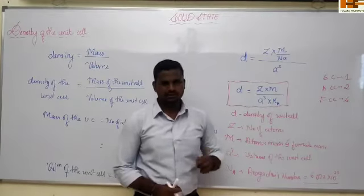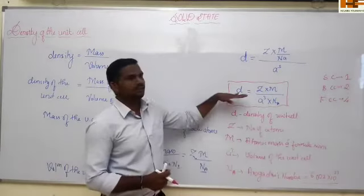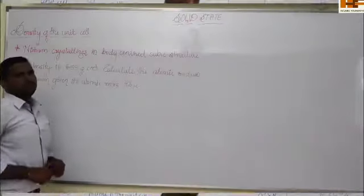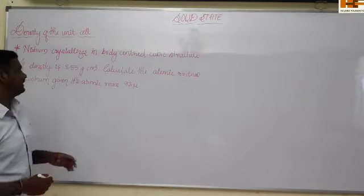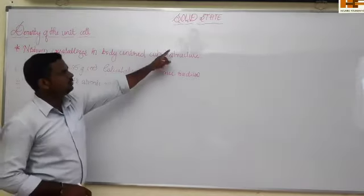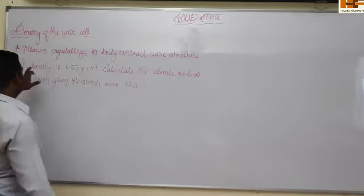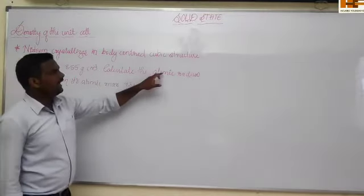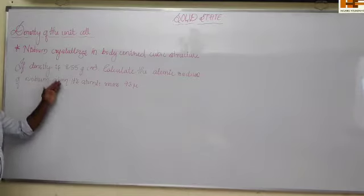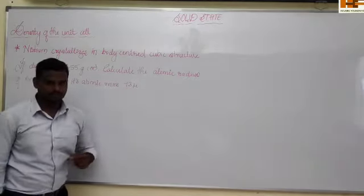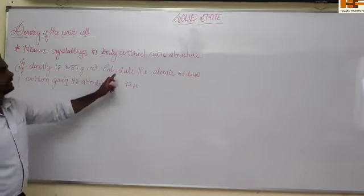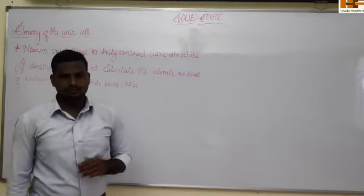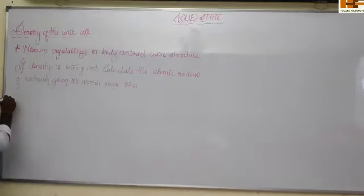Let's discuss some problems based on this. You may get one or two problems on density in your annual examination. The problem from the NCERT textbook: Niobium crystallizes in a body-centered cubic structure. If the density is 8.55 g/cm³, calculate the atomic radius of Niobium given its atomic mass is 93 g/mol. We have to find the atomic radius.